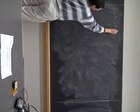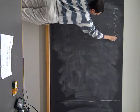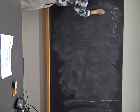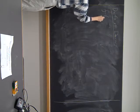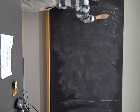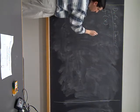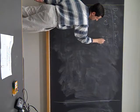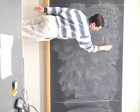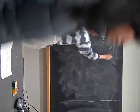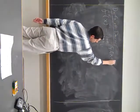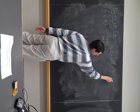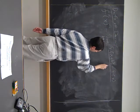Definition of the derivative: if you have some function f, then the derivative f prime of x is the limit as h tends to 0 of f of x plus h minus f of x, all over h.